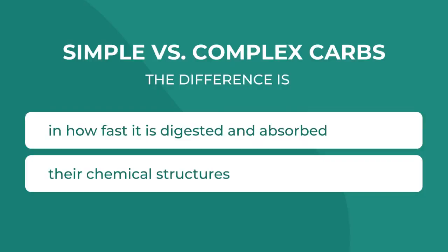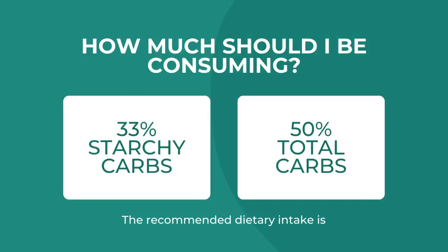What is the difference between simple and complex carbohydrates? The difference is in how fast they are digested and absorbed. The simple carbohydrates absorb quickly and raise your blood sugar — that's what I'm talking about when I refer to a blood sugar roller coaster. Another difference is their chemical structures.